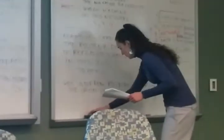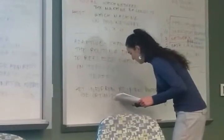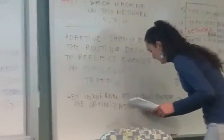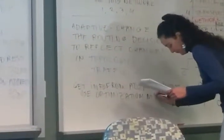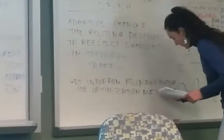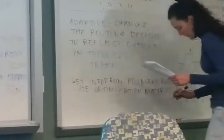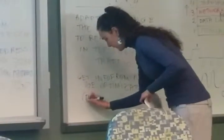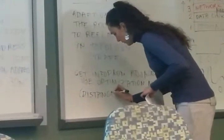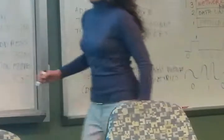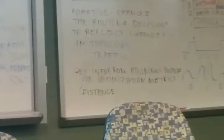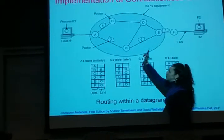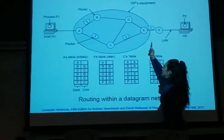So they use optimization metrics, such as distance. So the path could be calculated, what is the shortest path between A and F? It could be calculated by the number of routers in between.